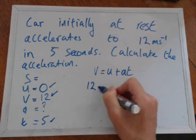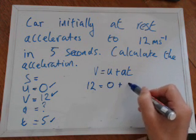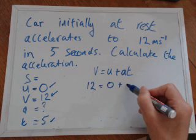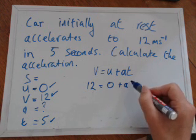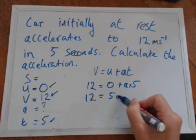So therefore, 12 is equal to zero plus acceleration we don't know, just leave that as A times five.